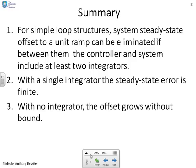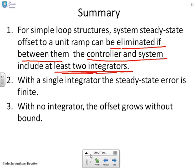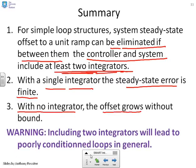In conclusion, for simple loop structures, the steady state offset to a unit ramp can be eliminated if the controller and system together include at least two integrators. With only a single integrator the steady state error is finite, and with no integrator the offset grows without bound. A warning: including two integrators will lead to poorly conditioned loops in general, so it is not recommended if it can be avoided.